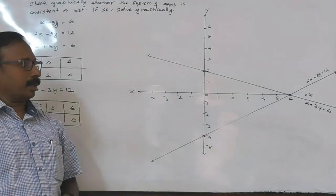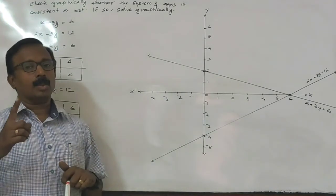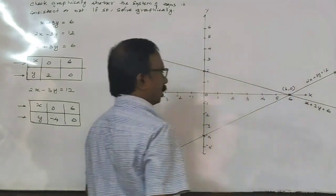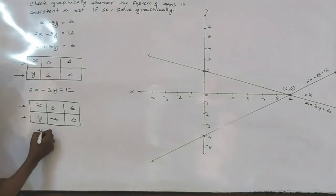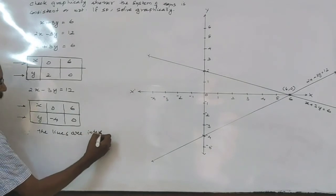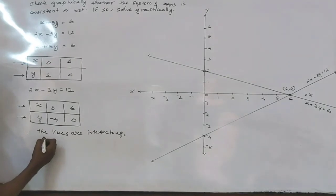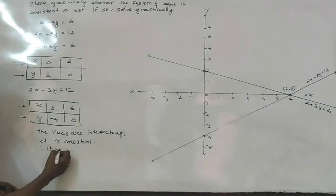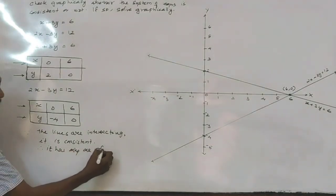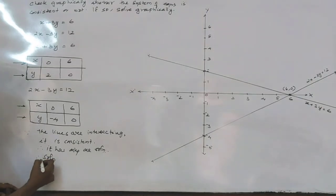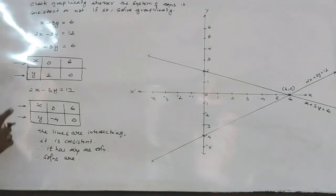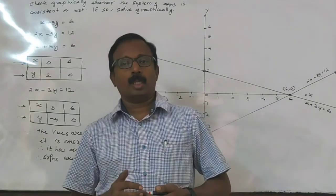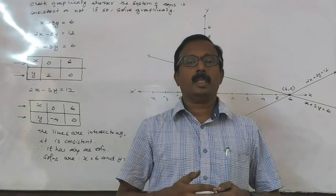Since the lines are intersecting, the system of equations is consistent and has only one solution, a unique solution. The solution is x is equal to 6 and y is equal to 0. This way we can find the solution of a pair of linear equations in two unknowns.